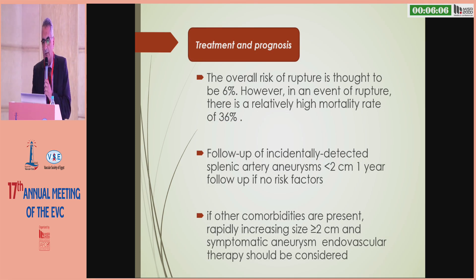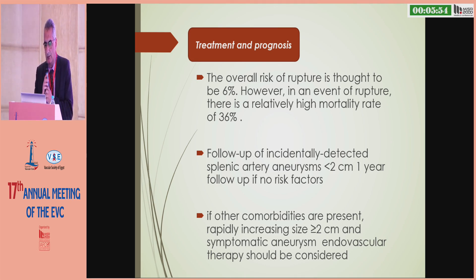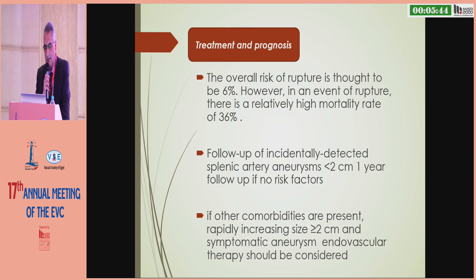The overall risk of rupture is thought to be 6%, however in the event of rupture there is a relatively high mortality rate of 36%. For aneurysms less than 2 centimeters with no risk factors, one-year follow-up is recommended. If there is rapid increase in size, the aneurysm is greater than or equal to 2 centimeters, or the patient is symptomatic, treatment should be considered.